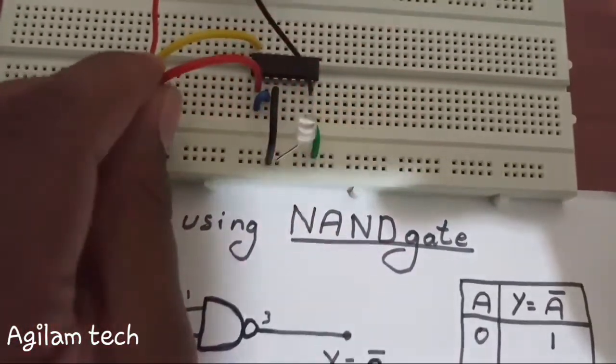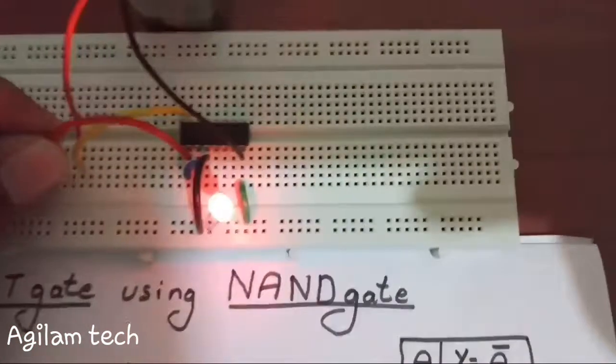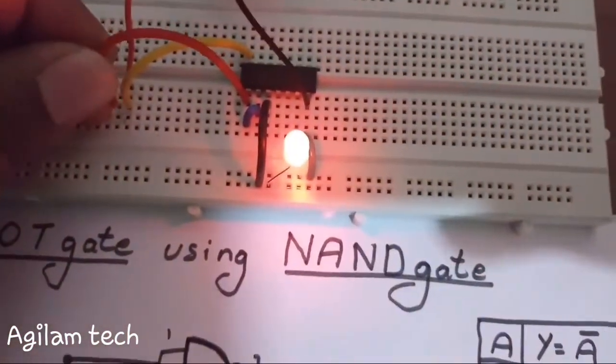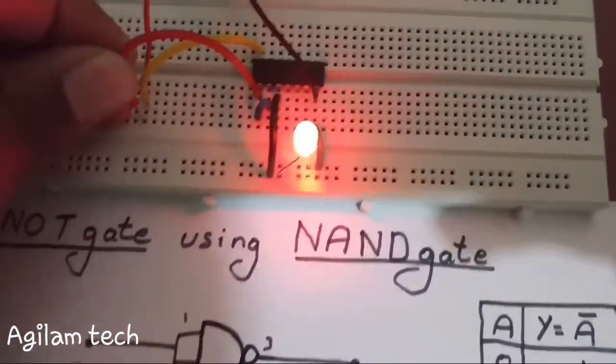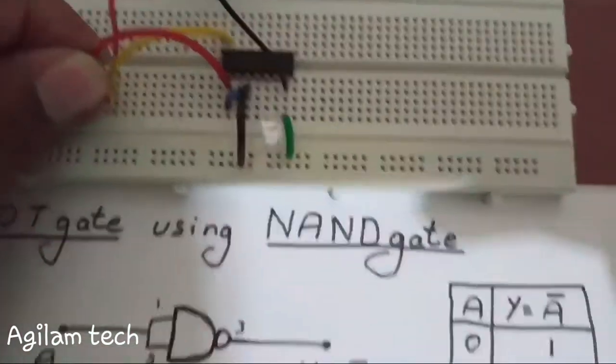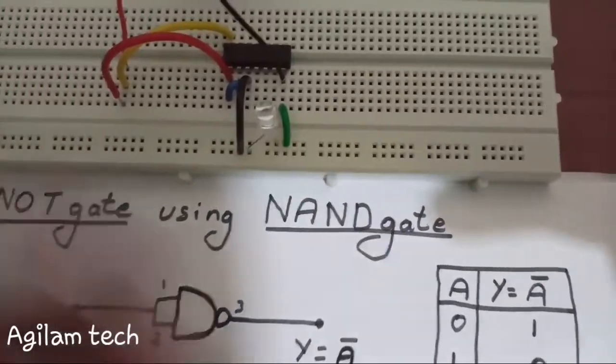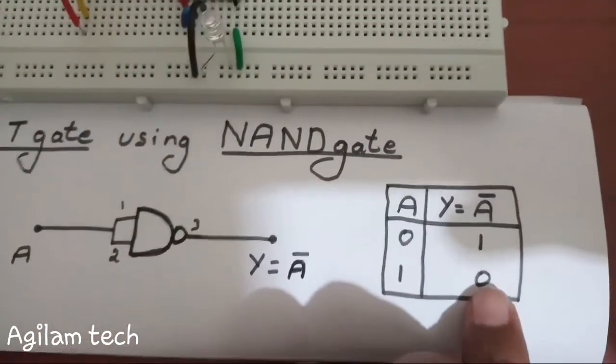Now we are going to see the LED turn off when input is 1. See carefully, guys. Input is 1, output is 0, as shown in the truth table. Hey everyone, to get more updates on electronics experiments, please subscribe to my channel.